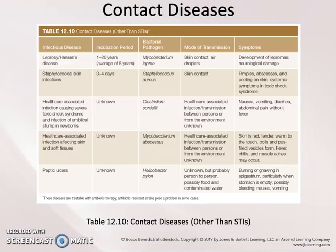Doctors diagnose Helicobacter pylori infections by looking for antibodies in the stomach, culturing microbes from stomach biopsies, or using a breath test where the patient breathes into a container and the exhaled air is tested for urease. H. pylori is fairly common worldwide, found in about 70% of the worldwide population and 30–40% of the United States population. Interestingly, long-term H. pylori infection is associated with the development of gastric cancer, the second most common cancer worldwide. Next, we will be talking about two other contact diseases, starting with leprosy.